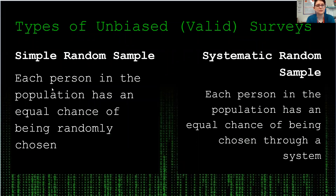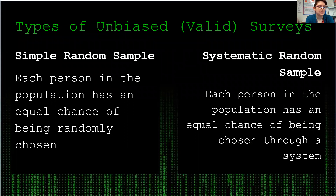We have two types of unbiased or valid surveys. The first is called a simple random sample. In a simple random sample, each person in the population has an equal chance of being randomly chosen. For example, if I were to put a bunch of names on a spinner and then spin it, that would be a simple random sample — everyone has a section on the spinner and each section is the same size, so they all have an equal chance of being chosen.